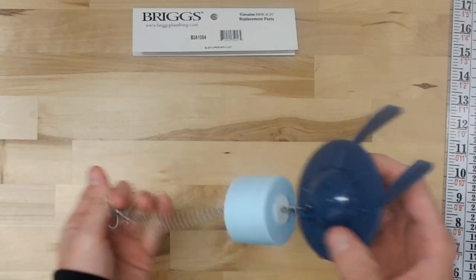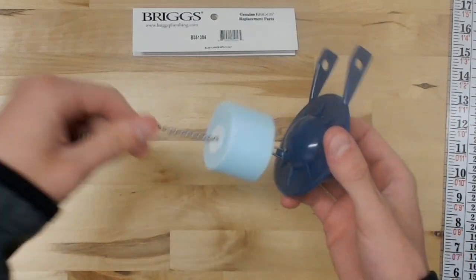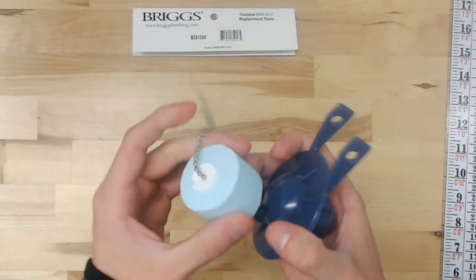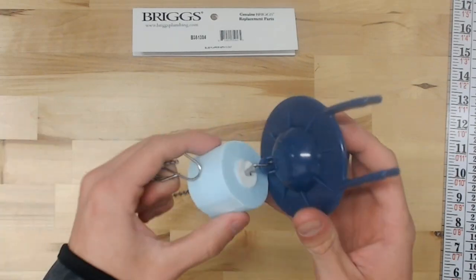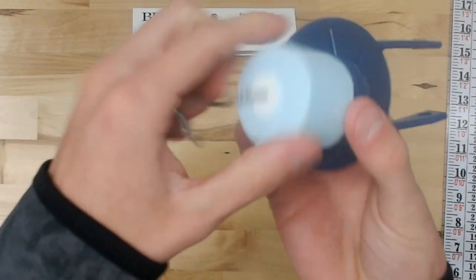Get the hook out there. As you can see the float here on the chain. It is a foam material as you can see there.